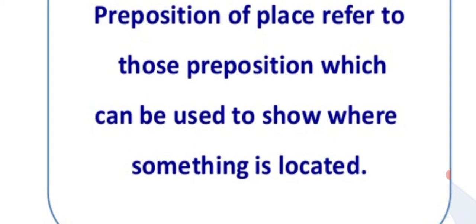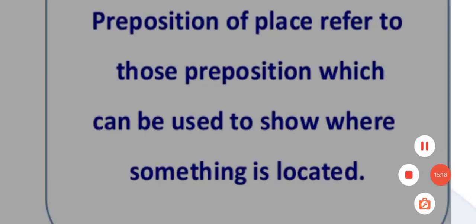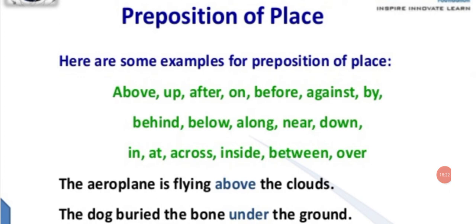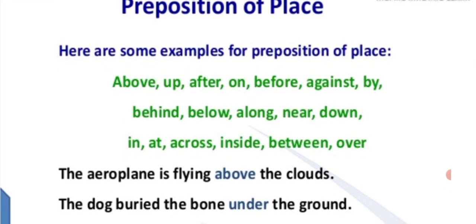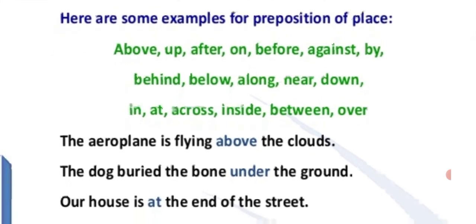Prepositions of place refer to those prepositions which can be used to show where something is located. Examples of prepositions of place include: above, up, after, on, before, against, by, behind, below, along, near, down, in, at, across, inside, between, over.